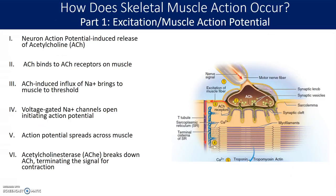The first step is excitation — getting an action potential developed on the muscle itself. You have to go from having an action potential on the nerve to the muscle. First, you have an action potential generated on the nerve, and as that action potential travels down to the end of the axon, getting to the terminal or the bouton, it causes the release of acetylcholine, a neurotransmitter.